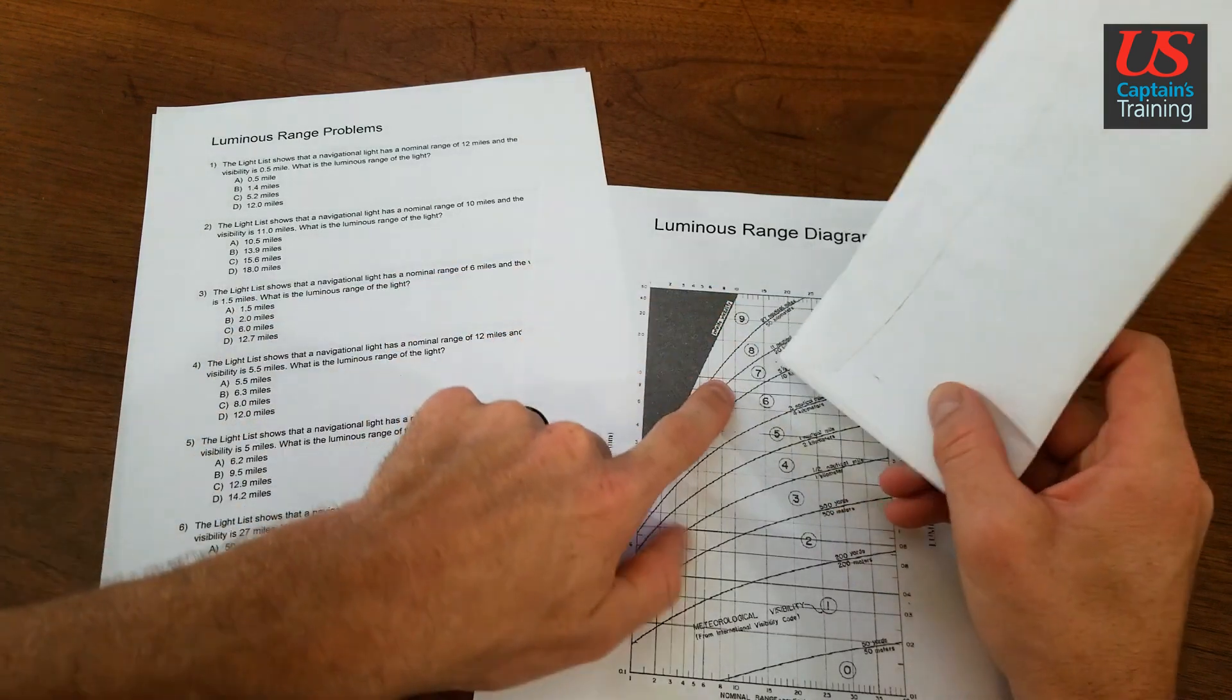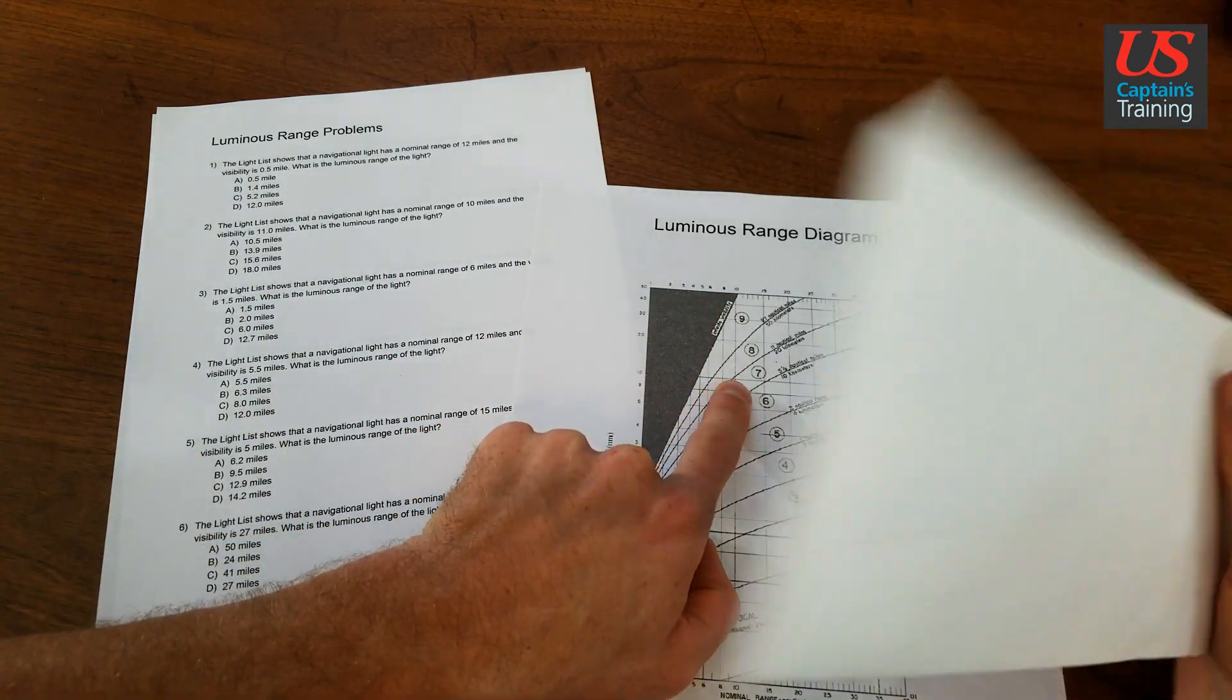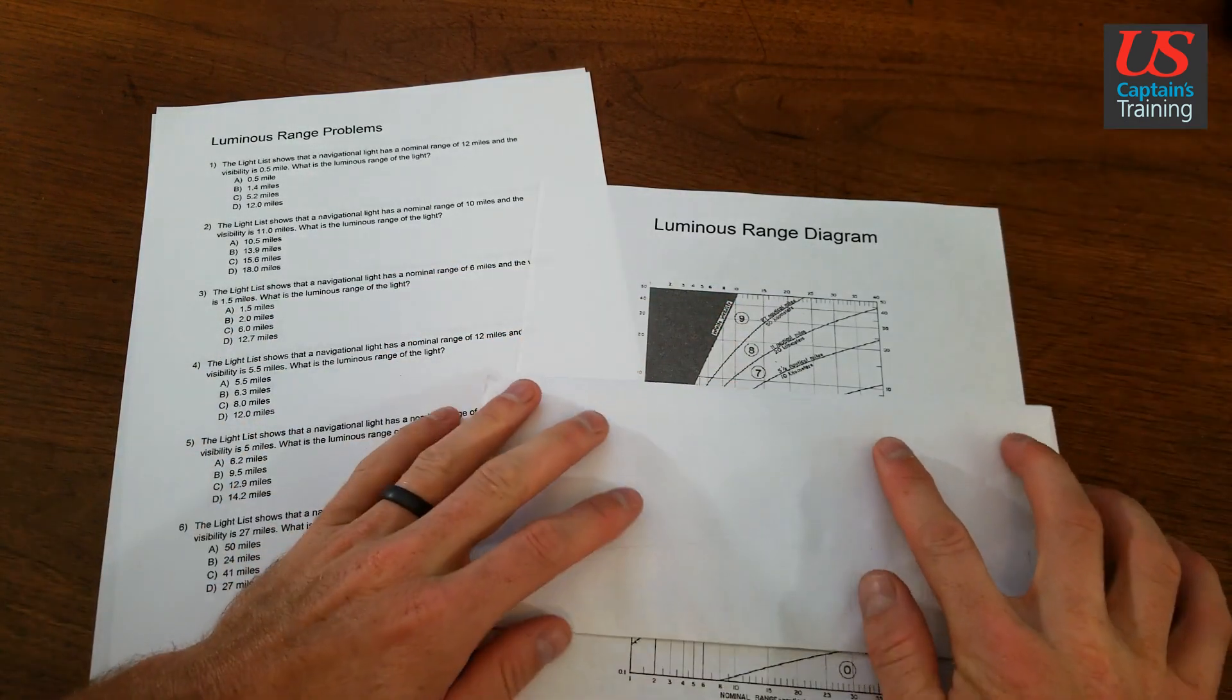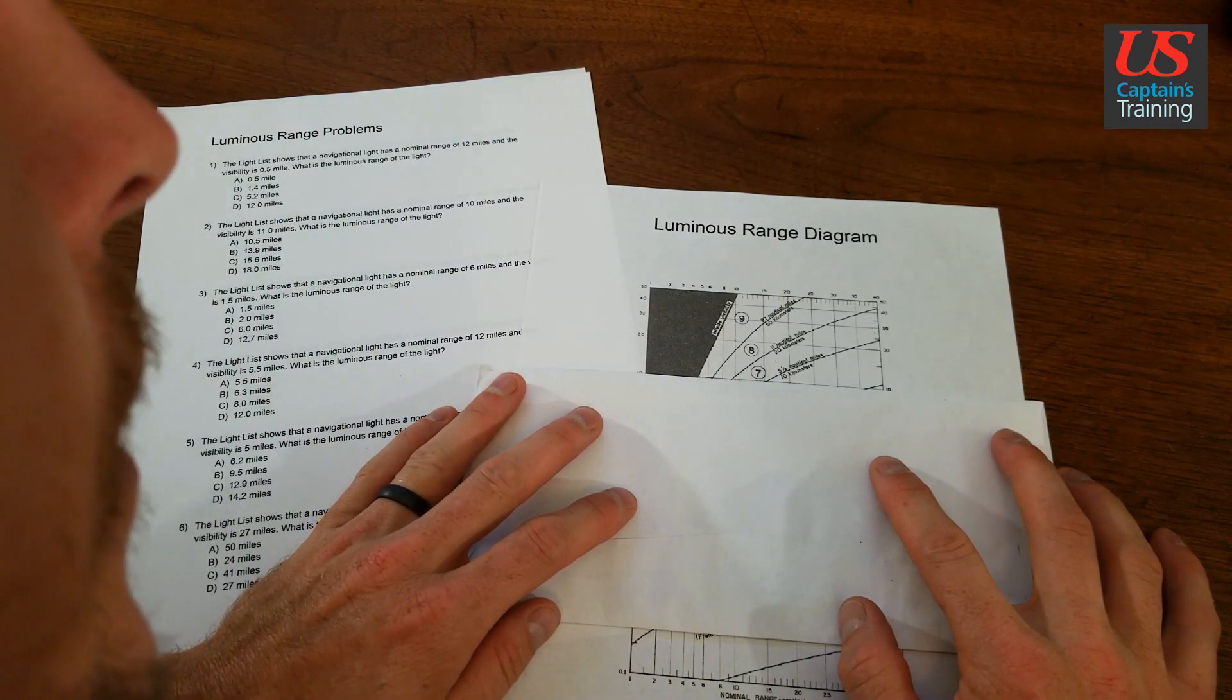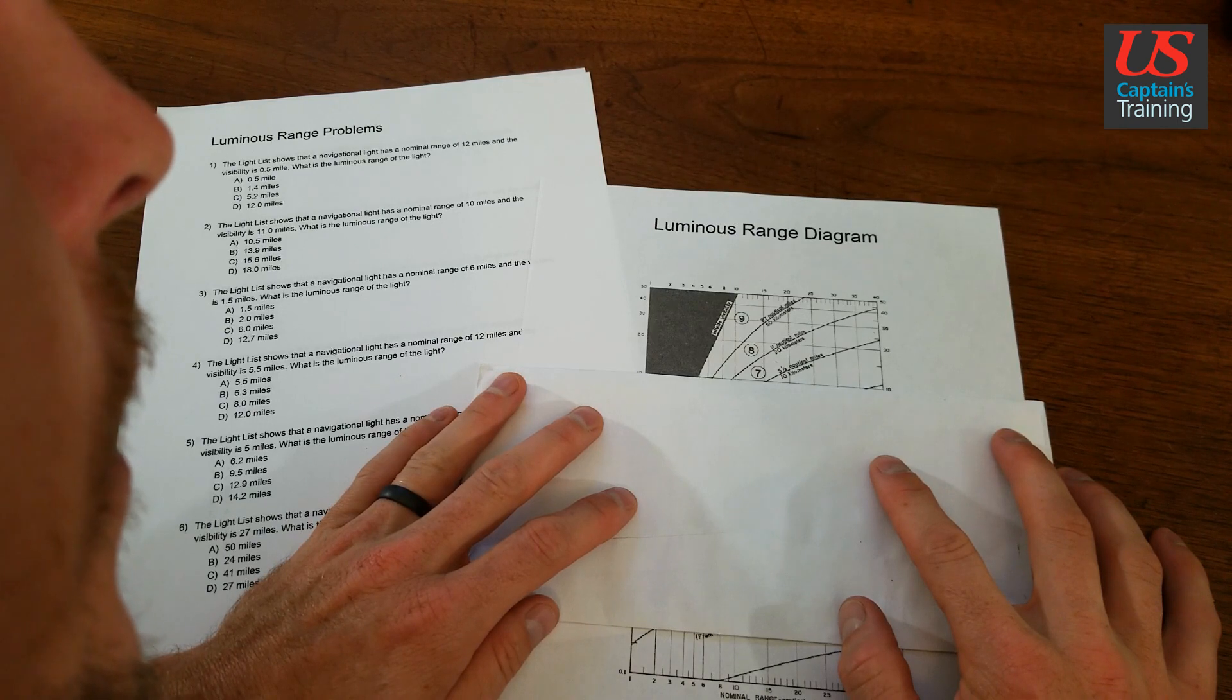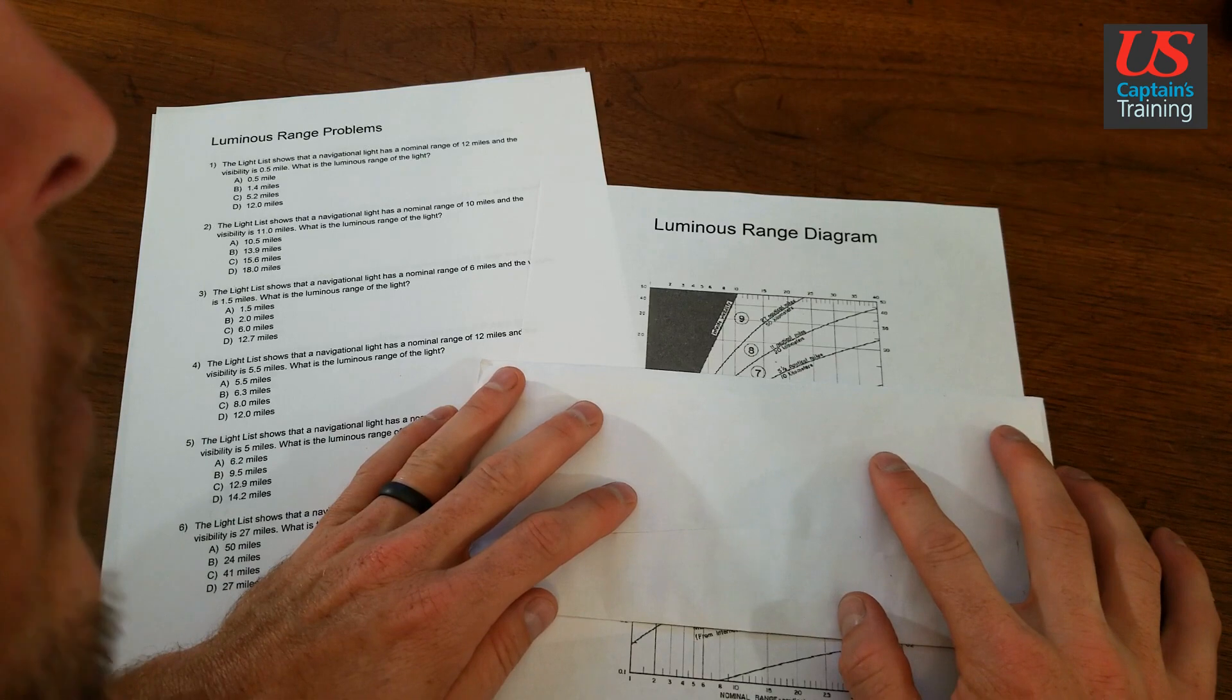11, 10. They intersect here. I'll line that up and it's just a little bit above that. So we're looking just a little bit above 10, like 11 miles.